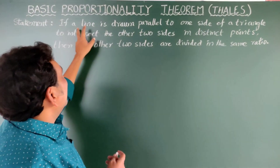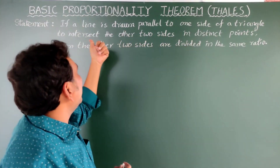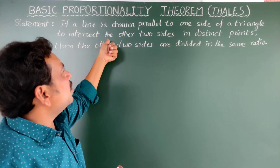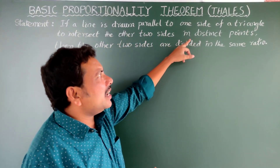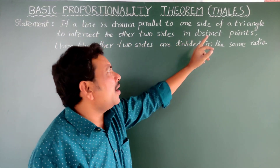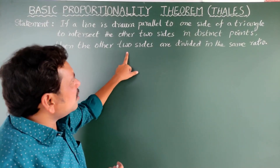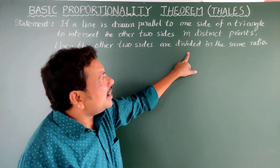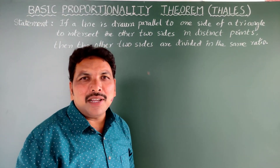Once more: if a line is drawn parallel to one side of a triangle to intersect the other two sides in distinct points, then the other two sides are divided in the same ratio.